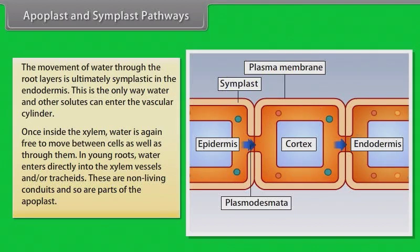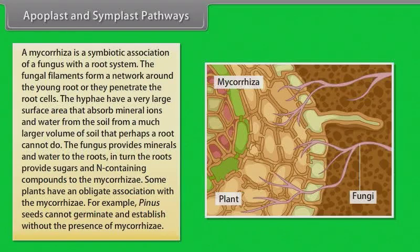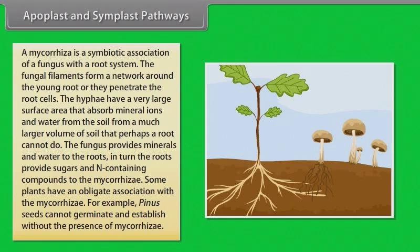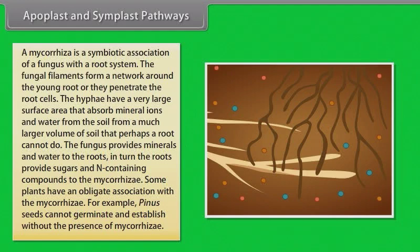Some plants have additional structures that help in water and mineral absorption. A mycorrhiza is a symbiotic association of a fungus with a root system. The fungal filaments form a network around the young root or penetrate the root cells. The hyphae have a very large surface area that absorbs mineral ions and water from the soil from a much larger volume of soil than a root alone can access. The fungus provides minerals and water to the roots. In turn, the roots provide sugars and nitrogen-containing compounds to the mycorrhizae. Some plants have an obligate association with mycorrhizae; for example, pine seeds cannot germinate and establish without the presence of mycorrhizae.